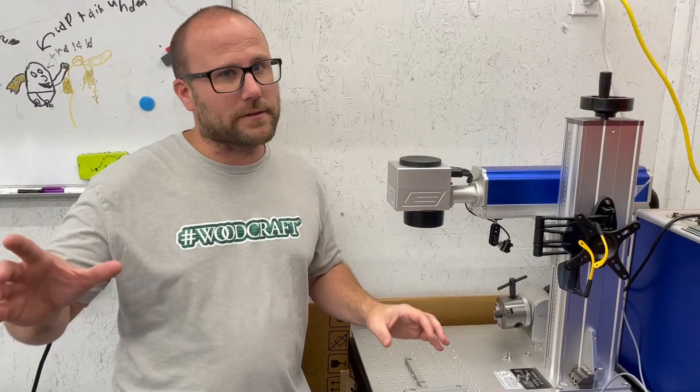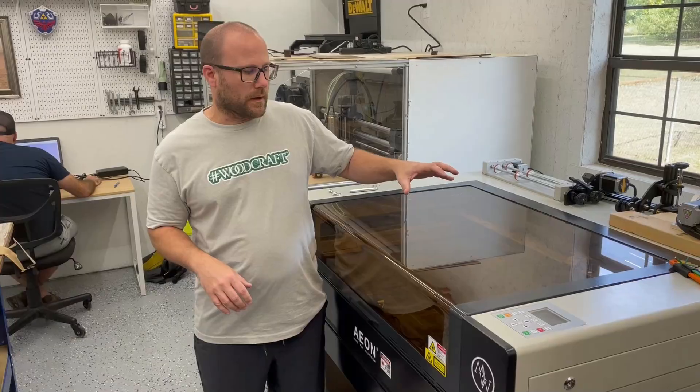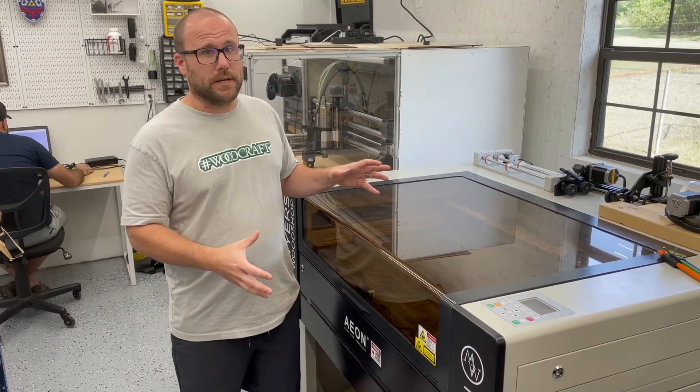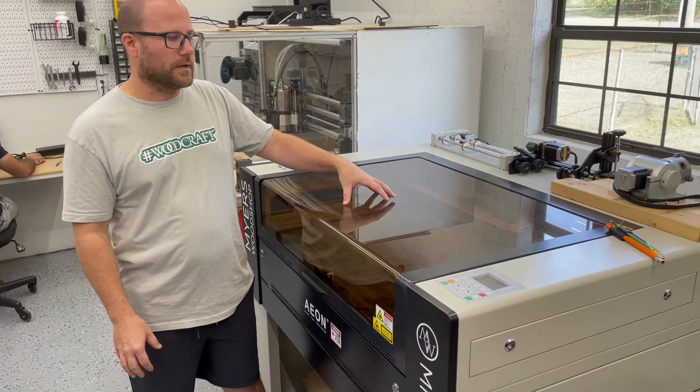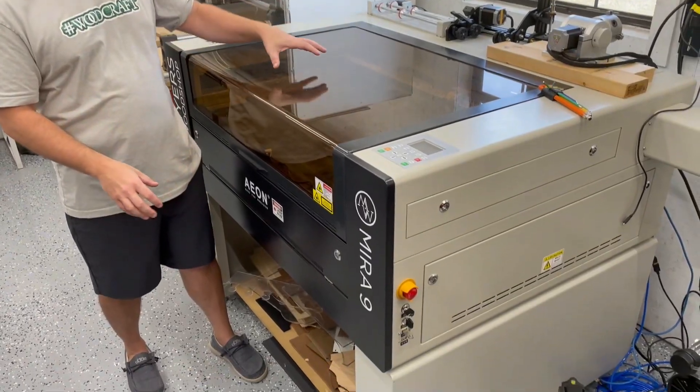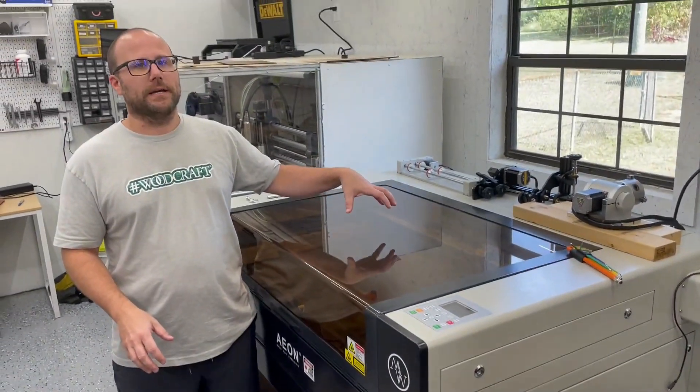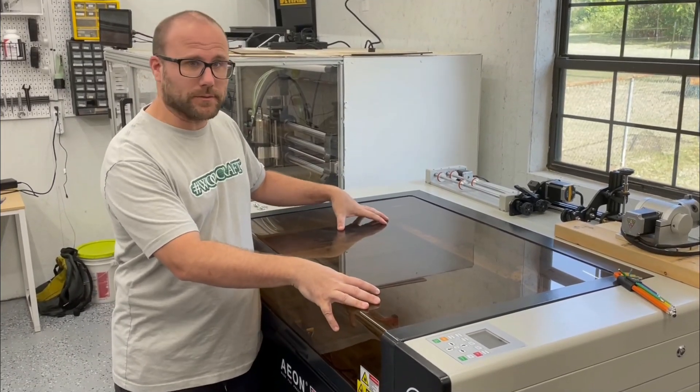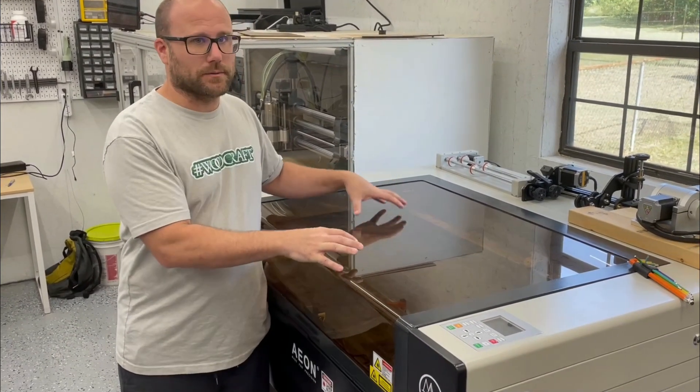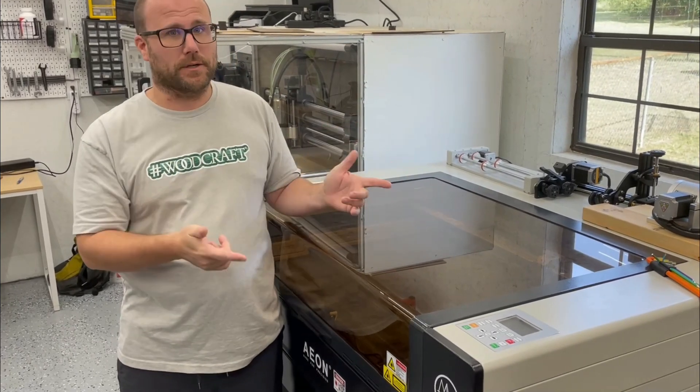Fiber laser is a little different than the laser you're used to me using. This is the normal laser that you've seen a whole bunch of. This is the Mira 9 from Aeon laser. This is a CO2 laser and this does primarily wood and some plastics. Now, I know you're going to ask what's the difference between this giant laser that I'm standing by, the CO2 laser, and the fiber laser that I'm going to show off.